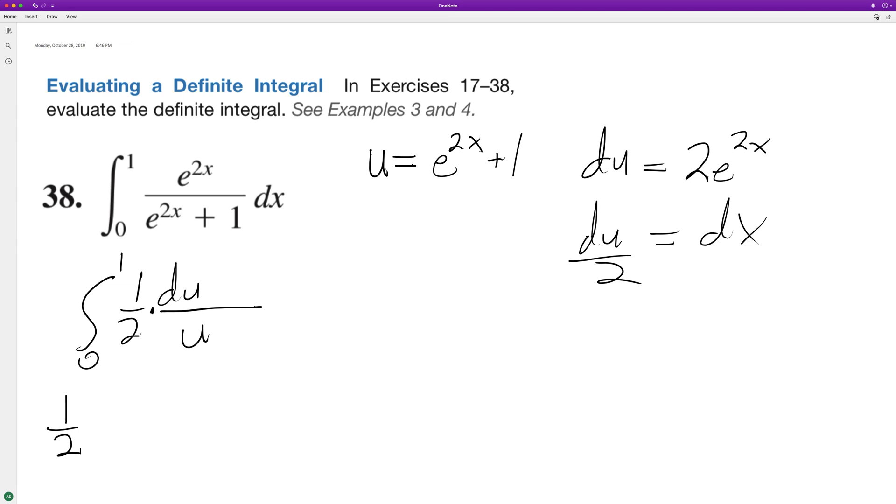So that one half is what we had to divide du by to get dx, which is e raised to the 2x, not 2 e raised to the 2x. So we're integrating u raised to the negative 1 du.